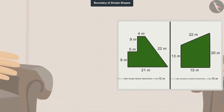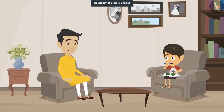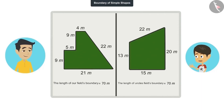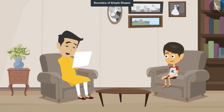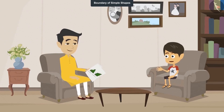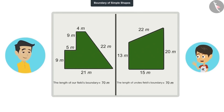Show me. Here it is. Just a minute — I may have made a mistake in adding. The measurement of the boundaries of uncle's and our farm seems to be the same. Give it to me, I'll check. No, Rheansh, there is no mistake. Your calculation is correct. So does that mean that the length of the boundaries of both fields is the same? Yes. But how is this possible? The shape of the two fields is different — how can the measurement of their boundaries be the same?